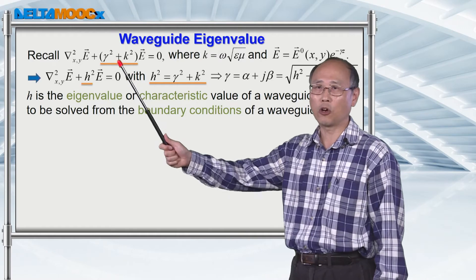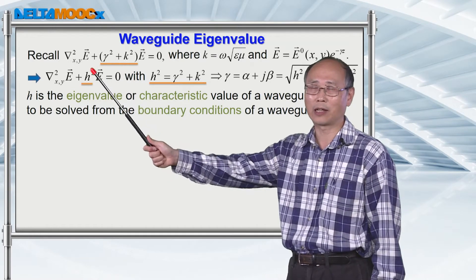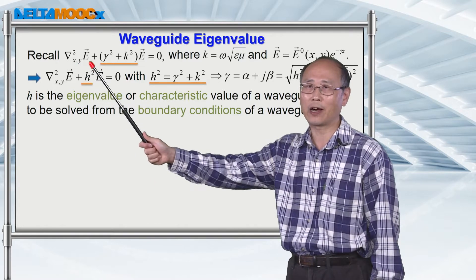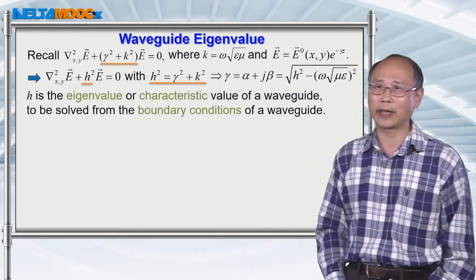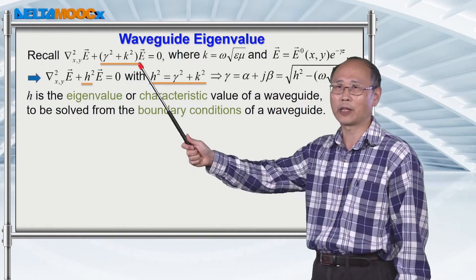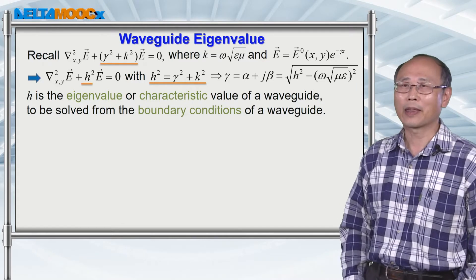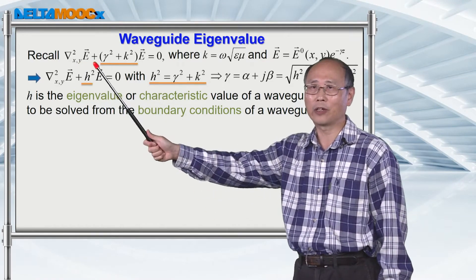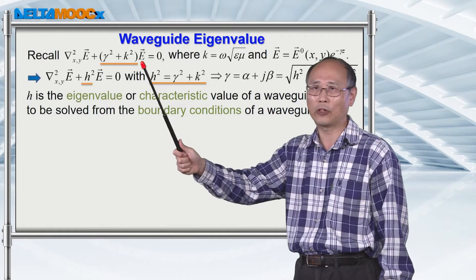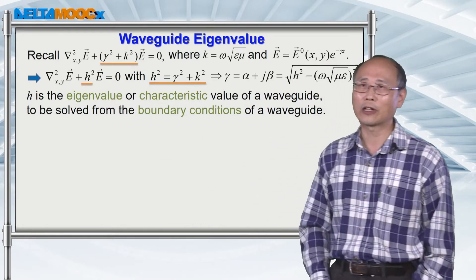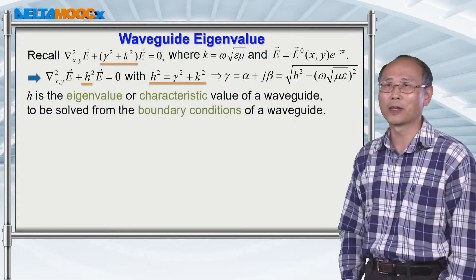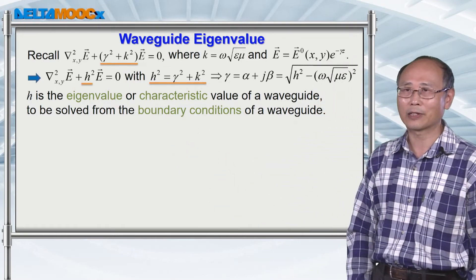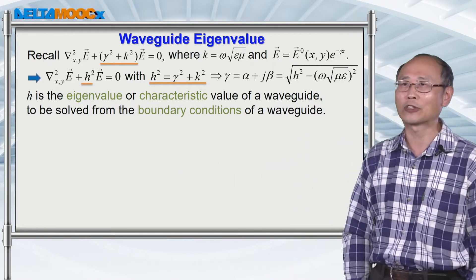Let's go back to the last session and the conclusion from Helmholtz's equation. You have the transverse expression on electric field plus gamma squared plus k squared multiplying with the electric field equal to zero. The mathematical operator on a field gives you a factor multiplying with the field itself. So this is an eigenvalue system — an eigen system. The gamma squared plus k squared is the factor defined as the eigenvalue of the system.